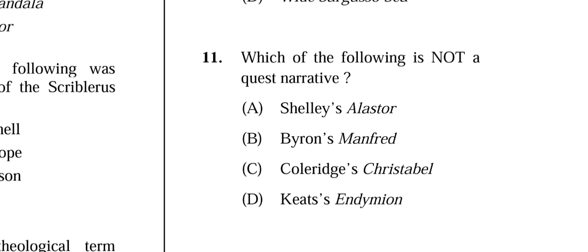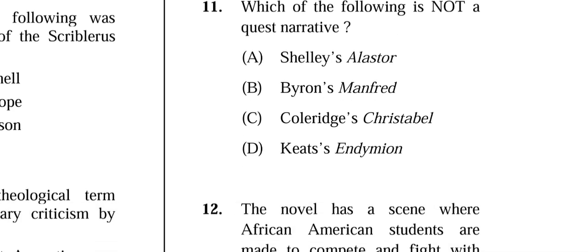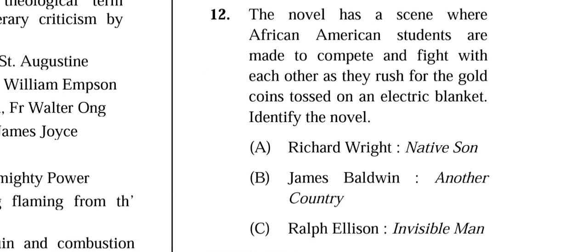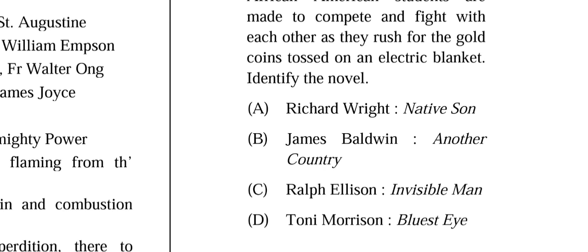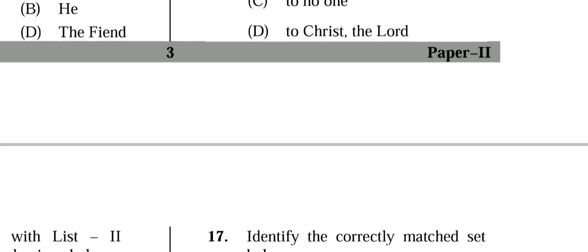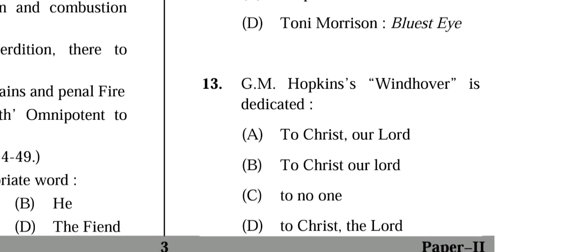Question 12: The novel has a scene where African-American students are made to compete and fight each other as they rush for gold coins tossed on an electric blanket. Identify the novel. The correct answer is (C) Ralph Ellison's 'Invisible Man.'